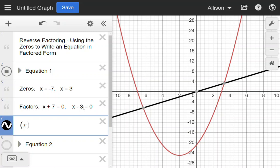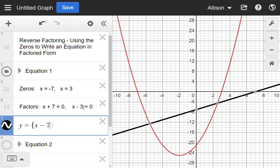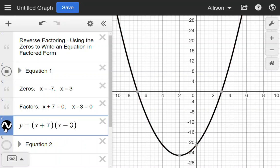If I graph those two factors, I can even put y equals in front. I'll have y = (x + 7)(x - 3). And I can see that this graph shows up right on top of the previous one, so I know that I have it correct.